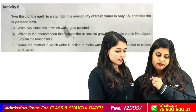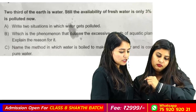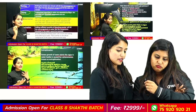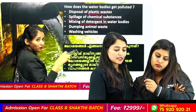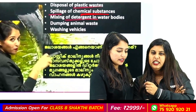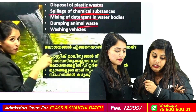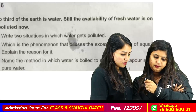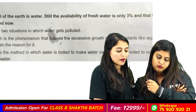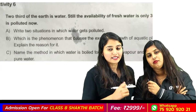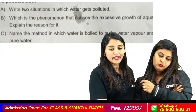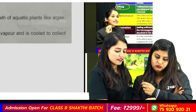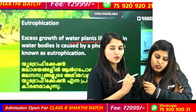Write two situations in which water gets polluted. Which phenomenon causes excessive growth of aquatic plants like algae? Algae is a problem. If fertilizers run off without control, this process is called Eutrophication.